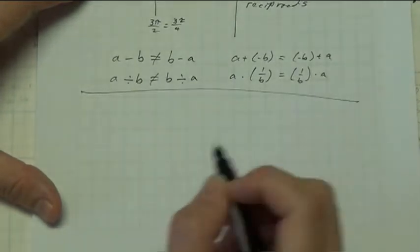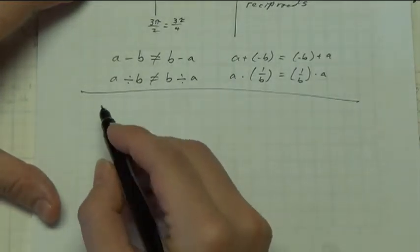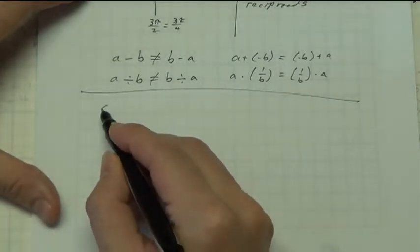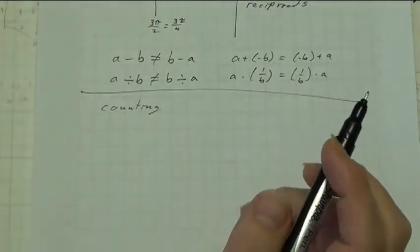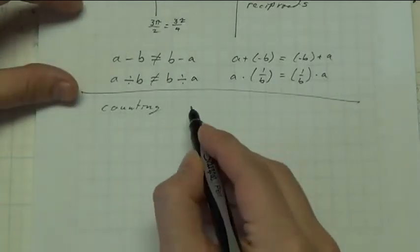Alright. My third pet peeve is just the way we name our counting system. Alright, 1, 2, 3, 4, 5, 6, 7, 8, 9, 10, 11, 12, and so on. We call that base 10.